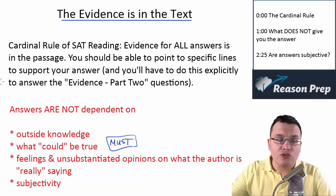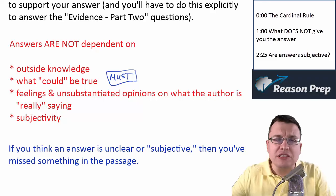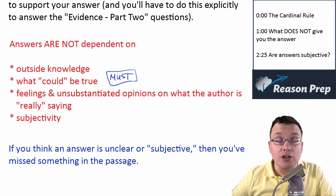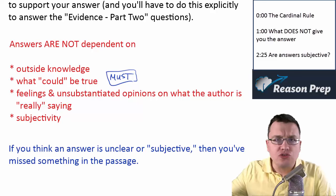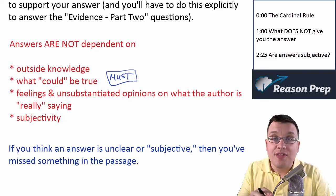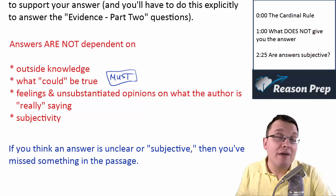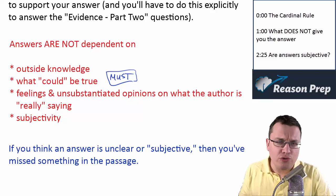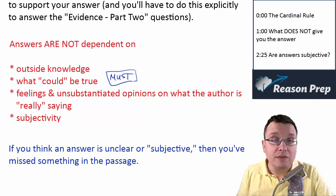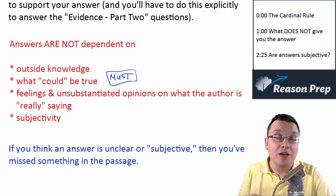And finally, subjectivity. A lot of times students will say the reading section is really subjective — sometimes it seems like both answers could be right. If you think a question is unclear or subjective, depending on your point of view, then you've missed something in the passage. That's the surest sign that you haven't found the evidence. Sometimes it's even one word on the hardest questions that points you to one answer over the other, or perhaps you haven't evaluated the choices carefully enough. If you think both answers are reasonable, you have to look harder, because the answer is on the page. It's in the text.